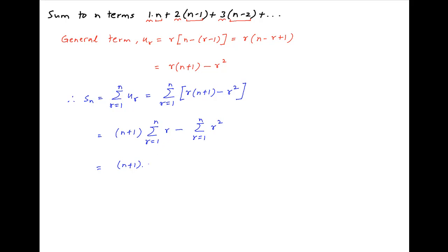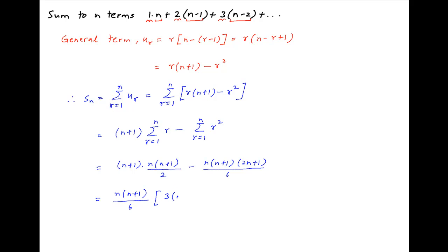Plugging in the values of summation r and summation r squared, we get Sn is equal to (n plus 1) times n(n+1)/2 minus n(n+1)(2n+1)/6. Taking n(n+1)/6 common, we multiply by 3(n+1) minus (2n+1), which simplifies inside the brackets as 3(n plus 1) minus (n plus 2).